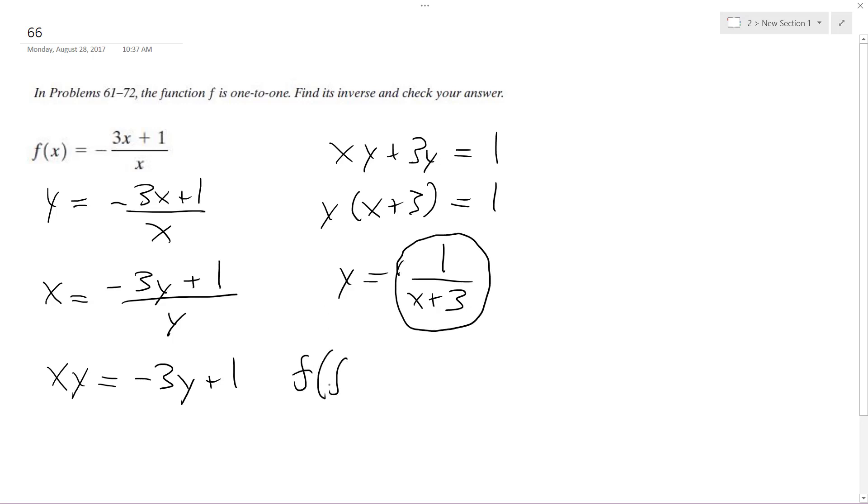So f of f inverse of x, we're going to get negative 3 times 1 over x plus 3, plus 1, over 1 over x plus 3.